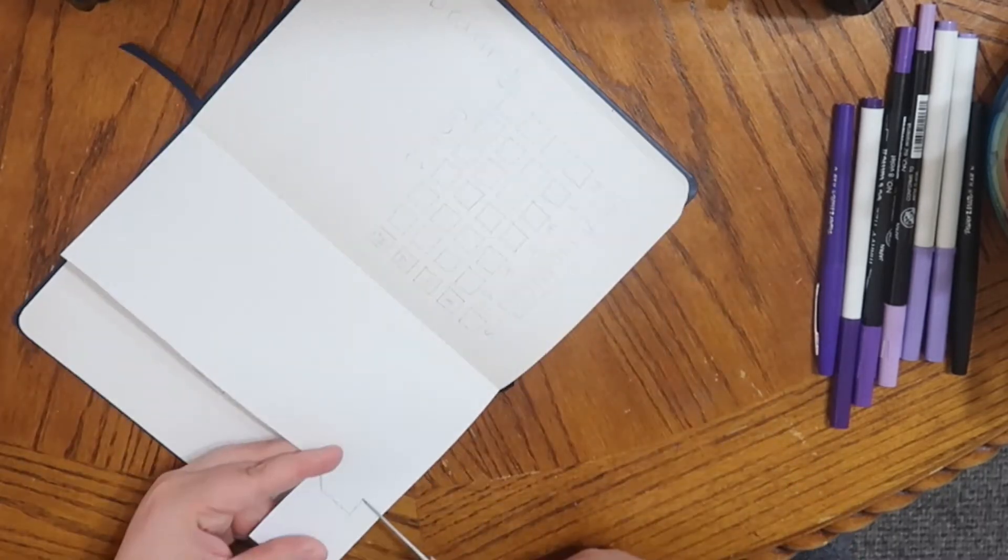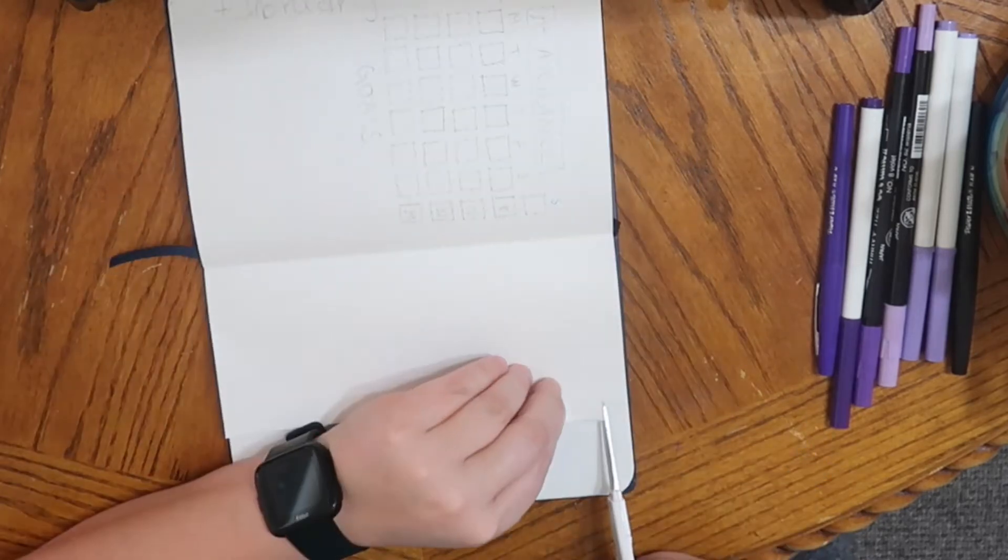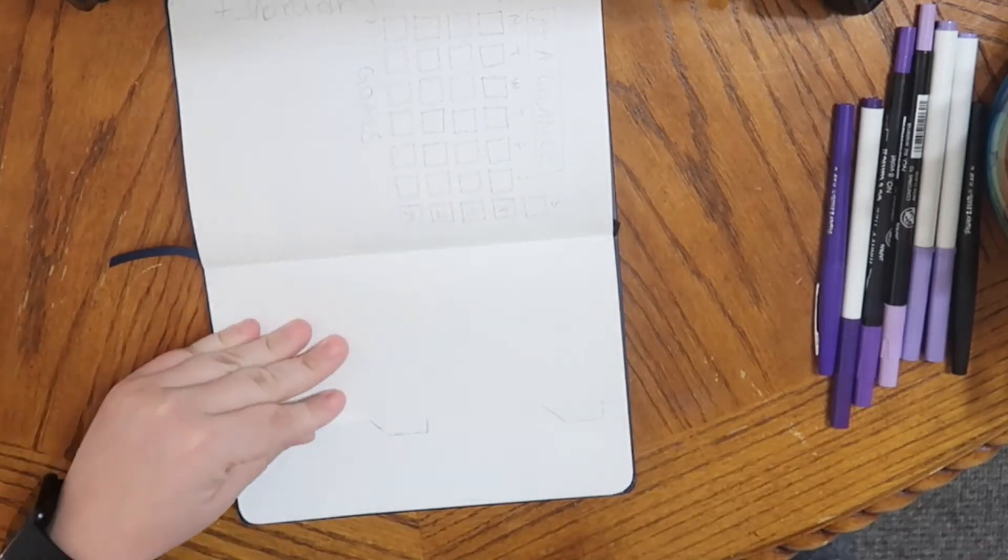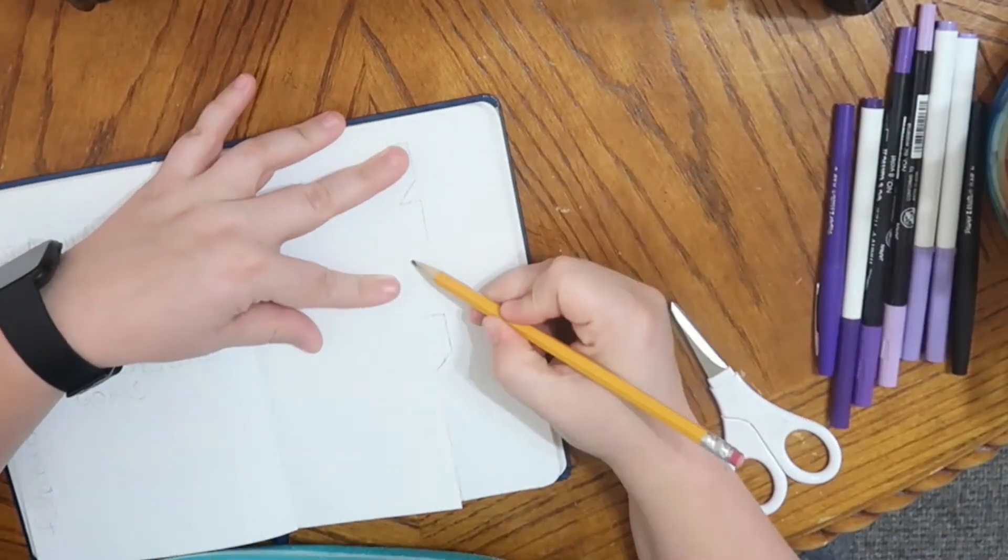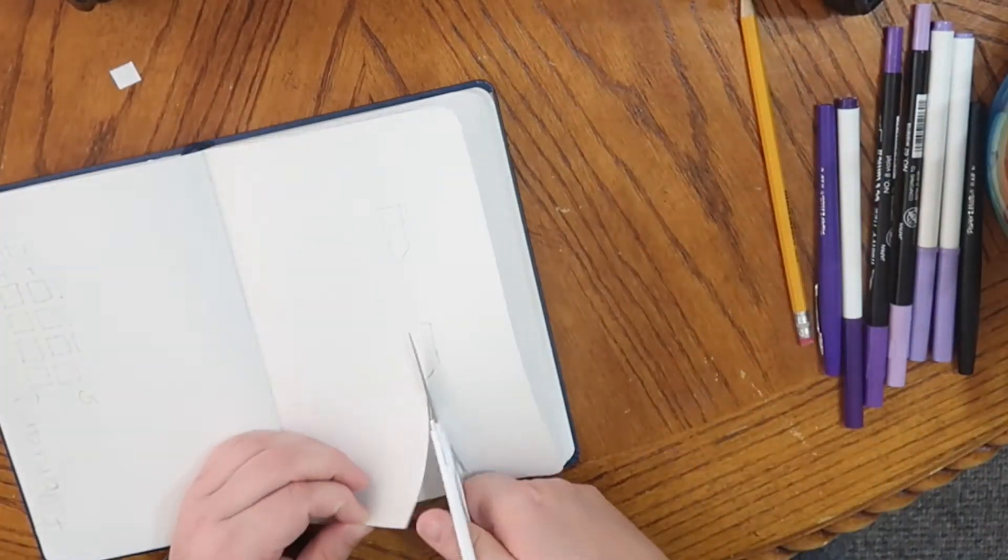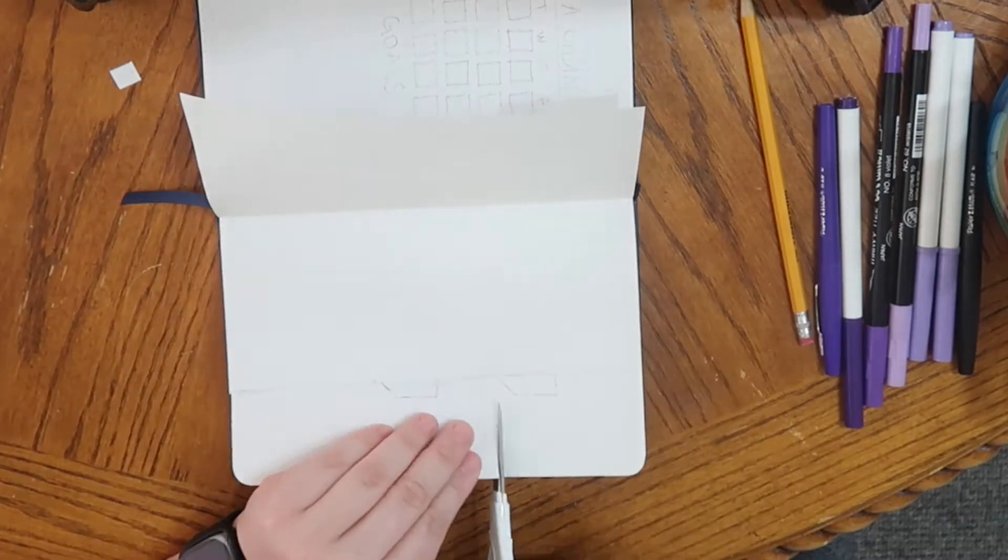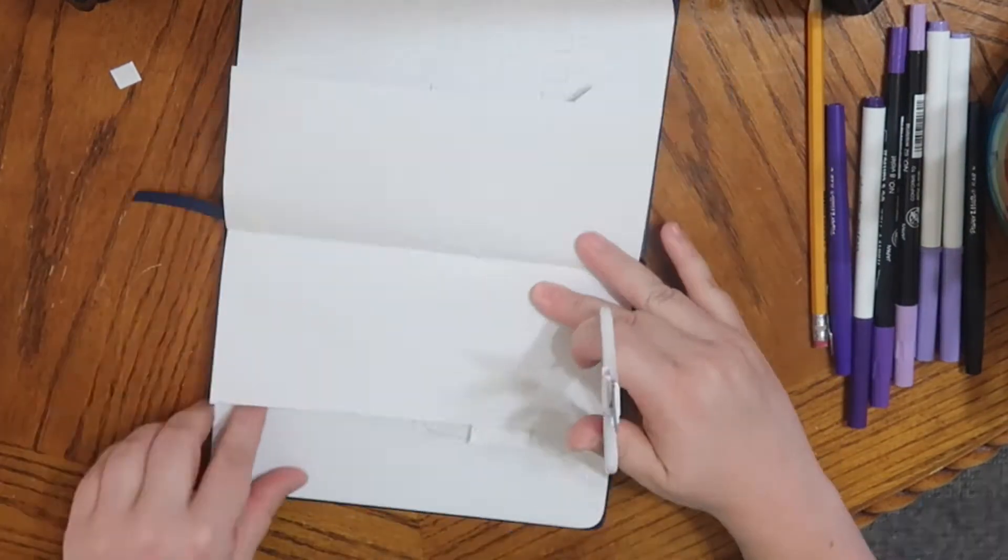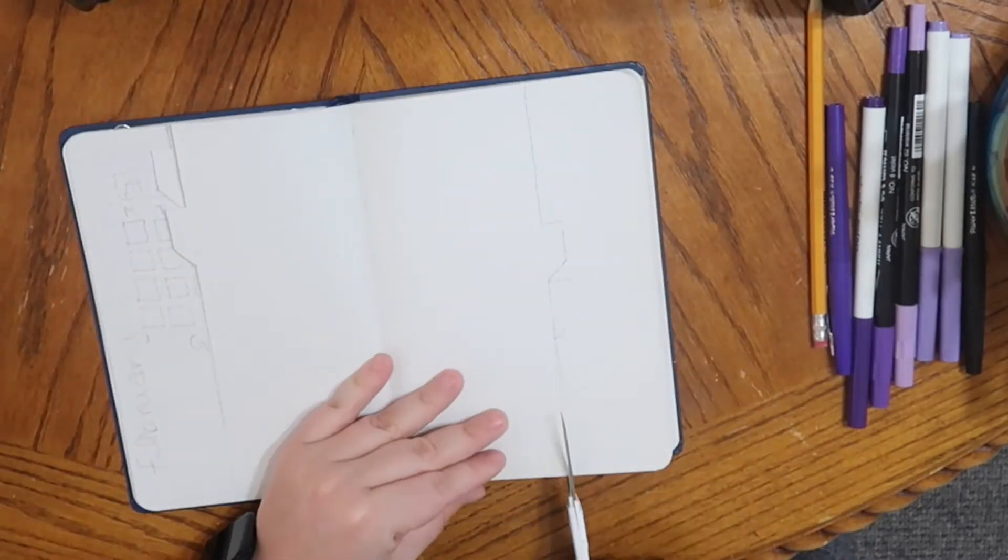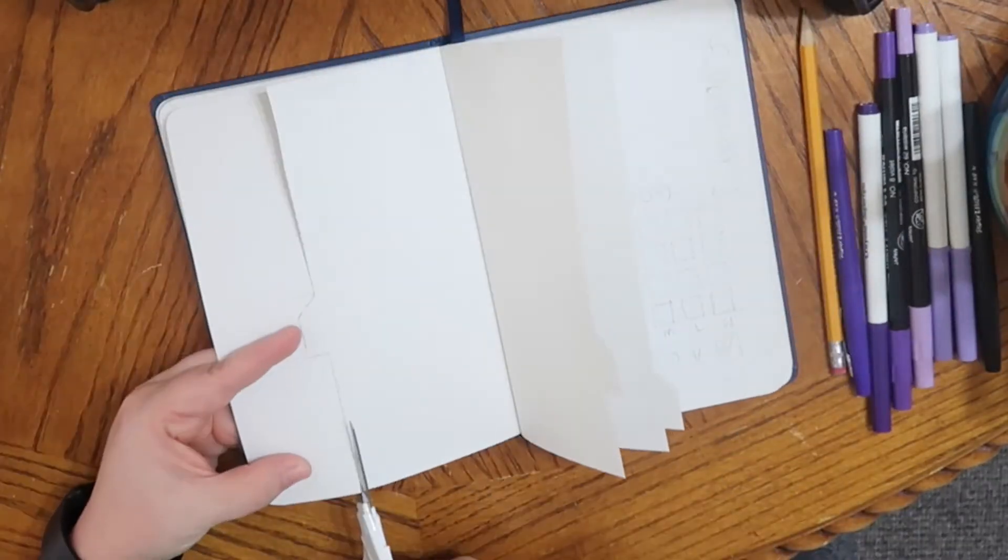Hello friends and welcome back. Thank you for coming back to another video. As you can tell, we are setting up the February bullet journal. And also, as you can see, I am literally cutting up the pages in my bullet journal book. And I was really scared to do this at first, but I decided I wanted to try doing the Dutch door system.